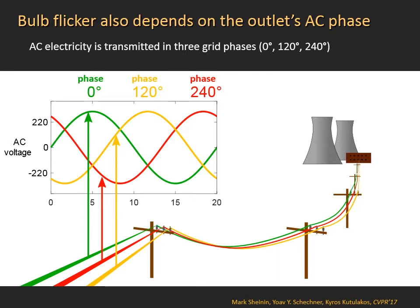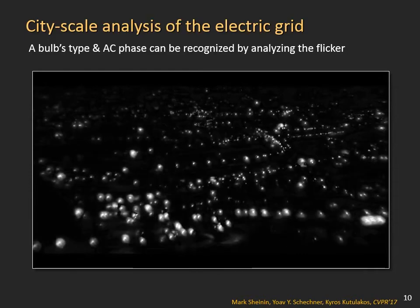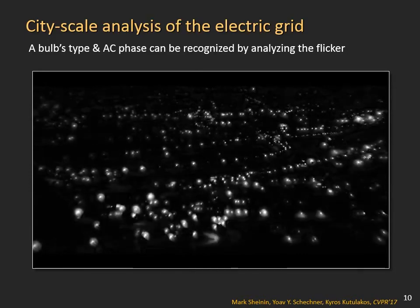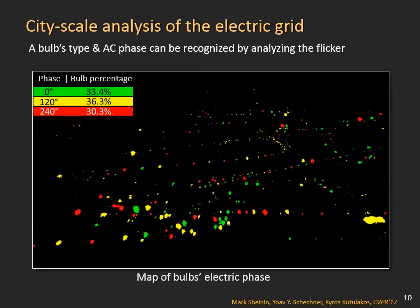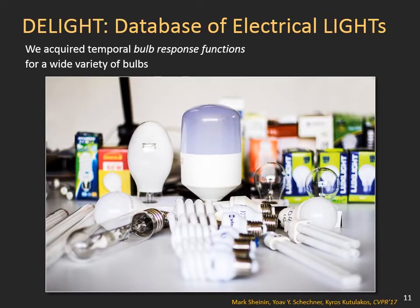Bulb flicker depends also on the AC phase that the bulb is connected to. Power plants supply AC in three phases. Each phase is carried by an exclusive power line. One phase is delayed by a third of the AC period and is termed phase 120 degrees. Another phase is delayed by two thirds of the AC period and is termed phase 240 degrees. One of the results of our work is that AC phase can be recognised at the scale of a city, which is valuable to power grid engineers. To do this, we compiled a database of bulb response functions for many common bulbs.